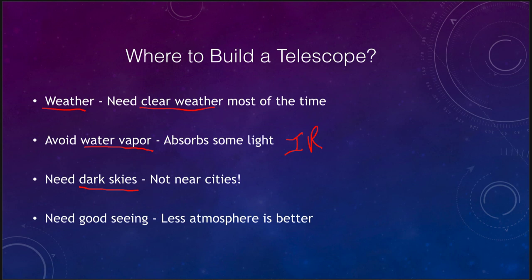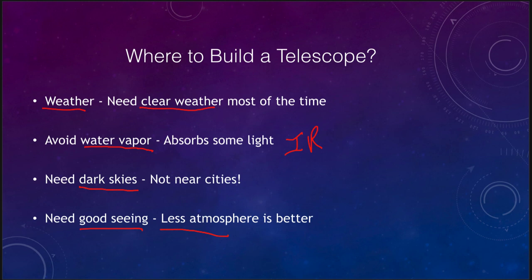Hawaii is also a major telescope location. Although it may not sound good for water vapor, high on Hawaii's mountains you are above most of the water in the atmosphere, and at high altitude you also get better seeing — less atmosphere to look through means fewer corrections needed. So the primary locations for telescopes today are Hawaii, southern Arizona, and the desert mountains of Chile.